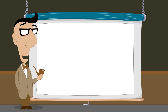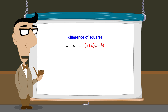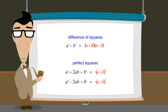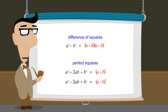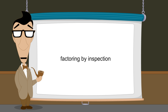We also saw that it is easy to identify the factors of certain forms of quadratic expressions called special products. These special products include quadratic expressions that are the difference of squares and quadratic expressions that are perfect squares. However, not all quadratic expressions are special products. In this lecture, we will see that quadratic expressions can sometimes be factored by a trial and error process called factoring by inspection. So let's see how this process works.